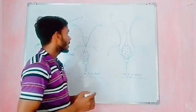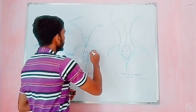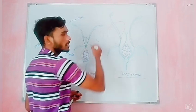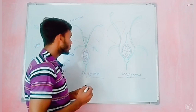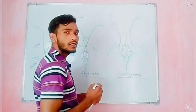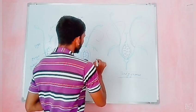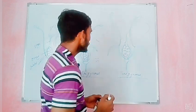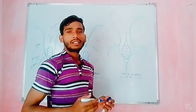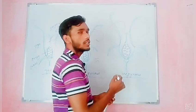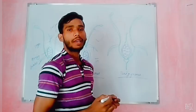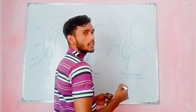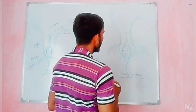Now we will talk about perigynous condition. When the sepal, petal, and stamens are arranged beside the ovary — we can see in the diagram that the sepal, petal, and stamens are arranged around the sides of the ovary — then it is called perigynous condition.